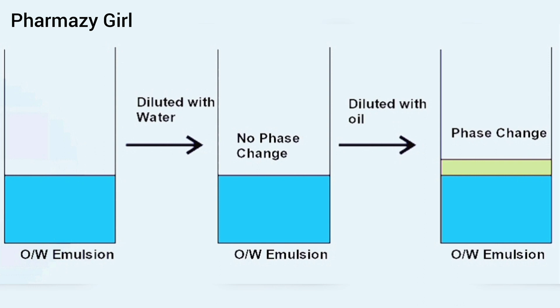As you can see in the diagram, if you add water to your emulsion and there is no phase change — meaning the water distributes uniformly — then the emulsion is identified as an oil in water emulsion. But if you dilute the oil in water emulsion with oil, the oil layer will separate out, causing breaking of the emulsion. Thus you can confirm that the emulsion is oil in water emulsion.